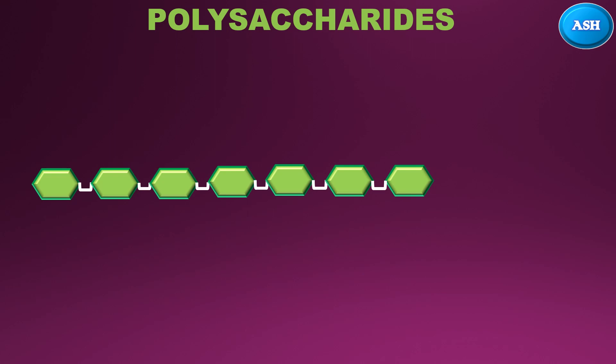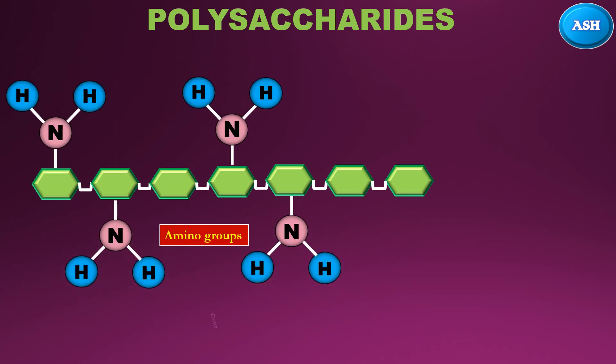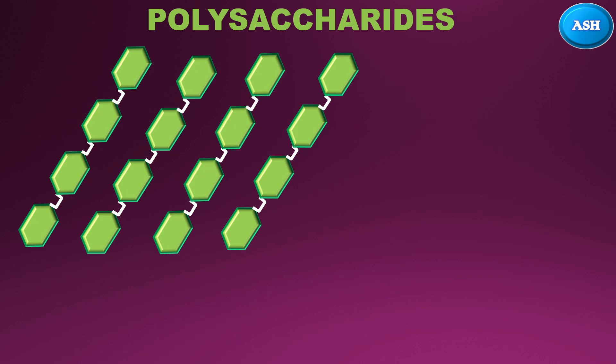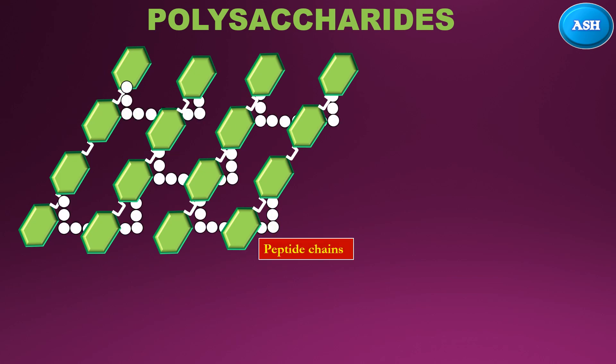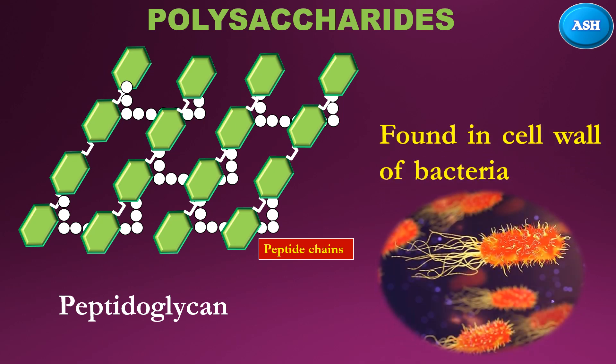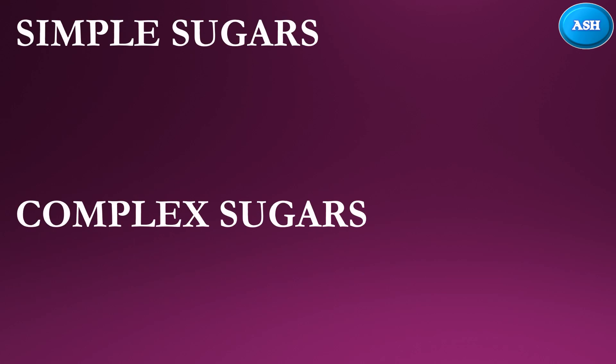A long chain of glucose with amino groups attached forms chitin, which is found in the exoskeleton of crabs. When glucose chains are arranged in a slanting order with peptide chains joining together, they form peptidoglycan. Peptidoglycan is found in the cell wall of bacteria.